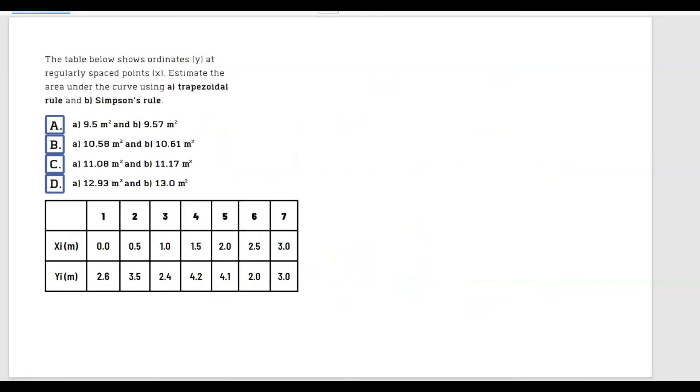Let's go ahead and work on an actual example right now. The table below shows ordinates y at regularly spaced points x. Estimate the area under the curve using a trapezoidal rule and b Simpson's rule. So what we're giving here, the common interval, we're going from zero to 0.5, from 0.5 to 1, from 1 to 1.5 to 2, which means that the w or the common interval is 0.5.